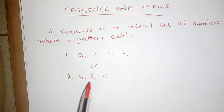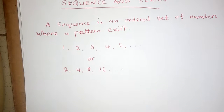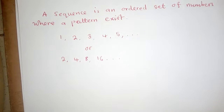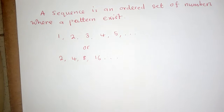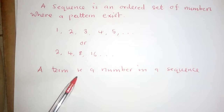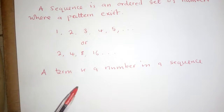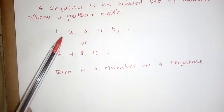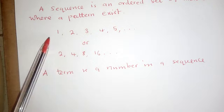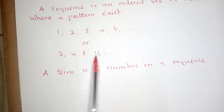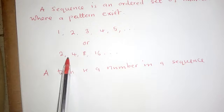Under sequences there are things we call terms. Using a simple definition, a term is a number in a sequence. For example, each number here is a term — this is a term, this is a term, and so on. In a sequence, we refer to positions as the first term, second term, and so on.